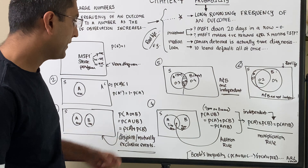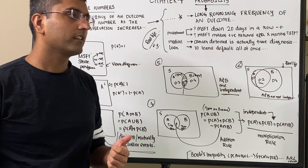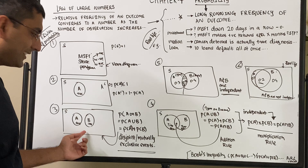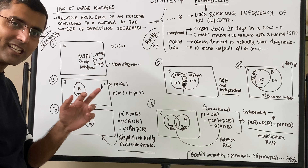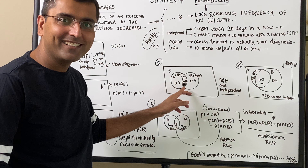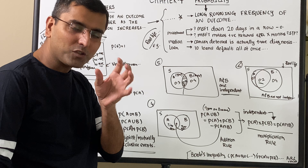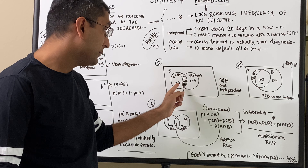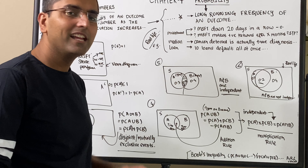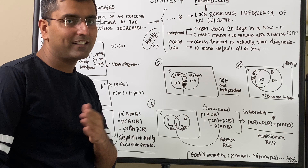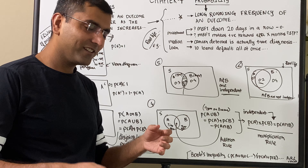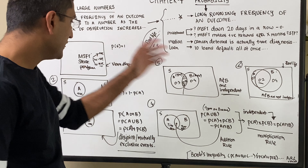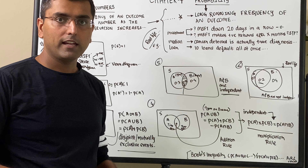An important distinction to keep in mind: disjoint or mutually exclusive events do not mean independent. Independence is a specific condition — there must be some intersection, but at a sweet spot where the product of individual probabilities equals the intersection probability. If it's greater or lesser, they're not independent. This is a critical conceptual difference, and we'll continue building on these learnings in the next chapter.